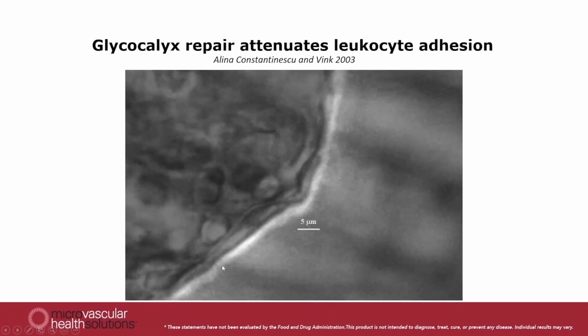If you zoom in a little bit, you can see that this fluorescent lining is now on the luminal surface of the endothelium, rebuilding a glycocalyx of a couple of microns in dimension.